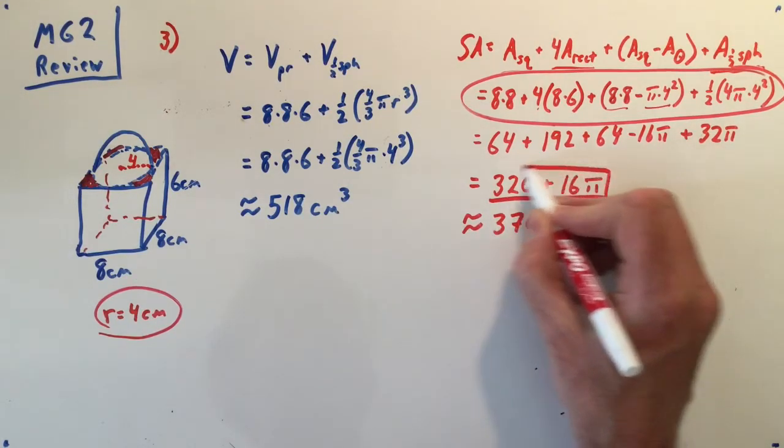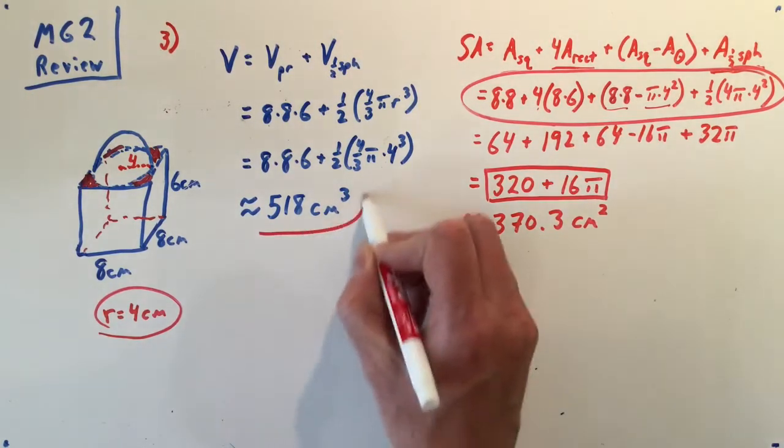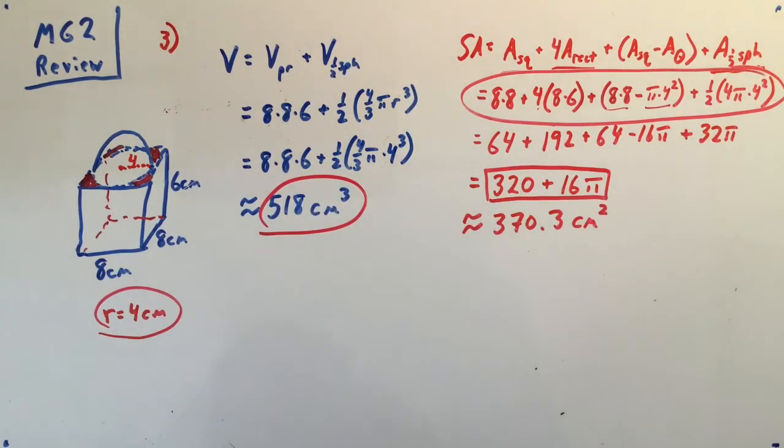Come down to this exact value right here and then go into your calculator. Either way you're going to get 370.3 square centimeters for the surface area, 518 cubic centimeters for the volume.